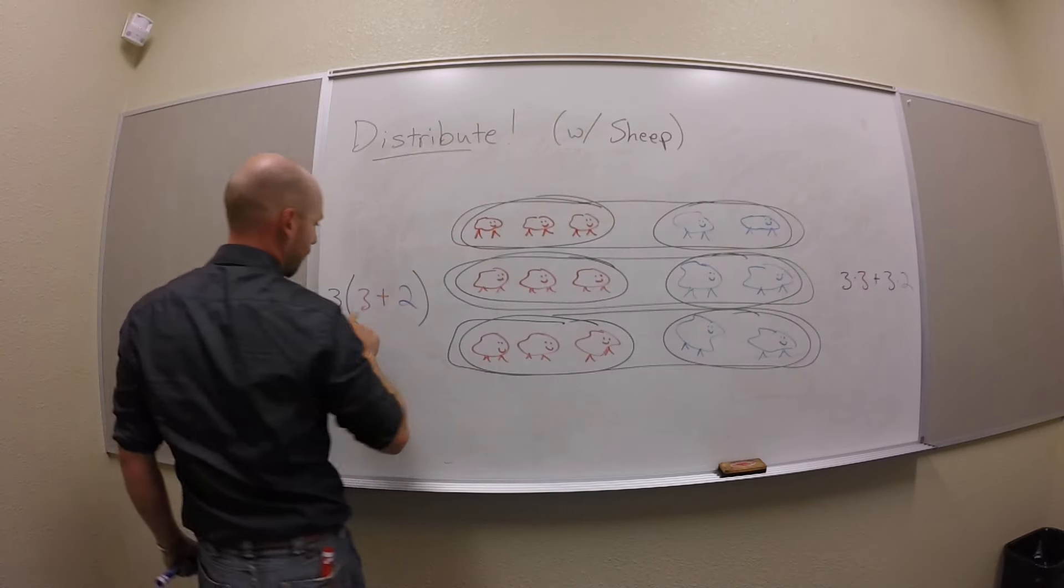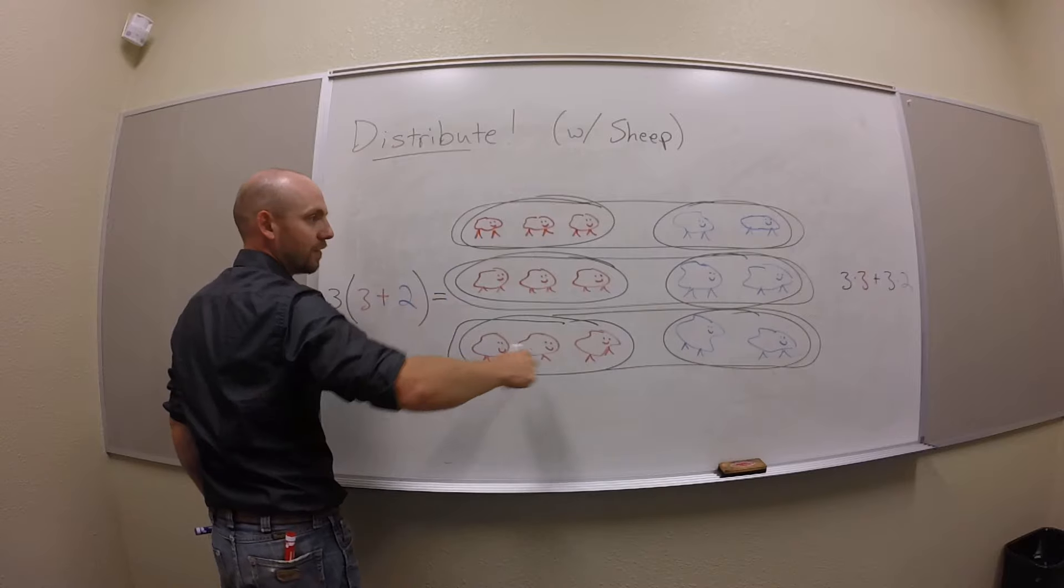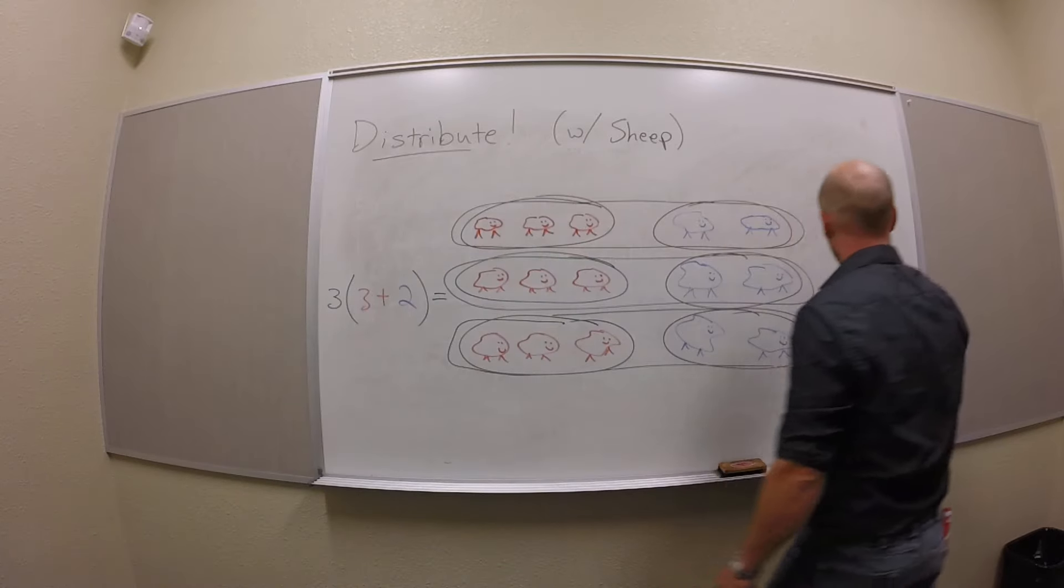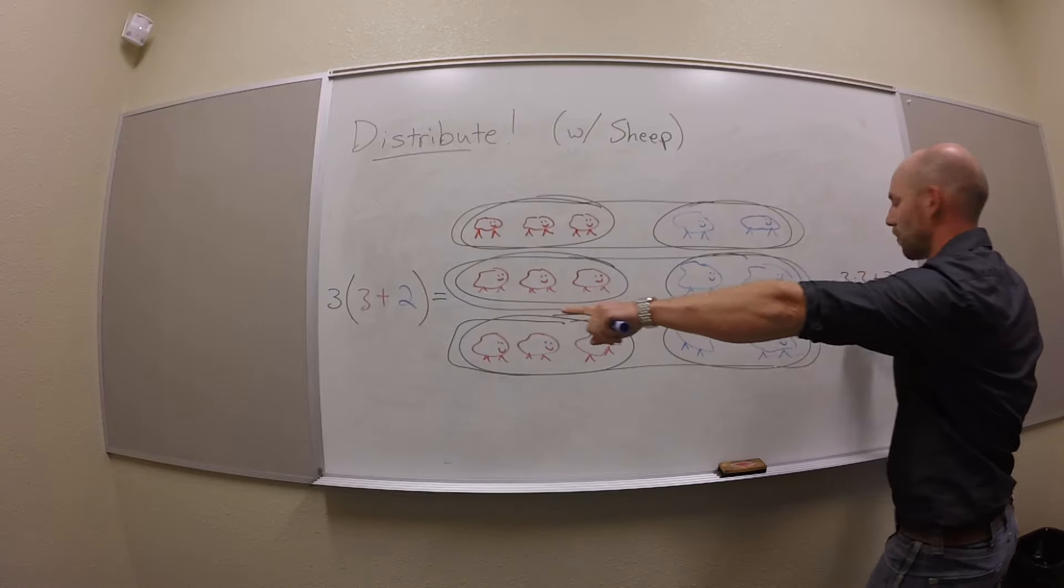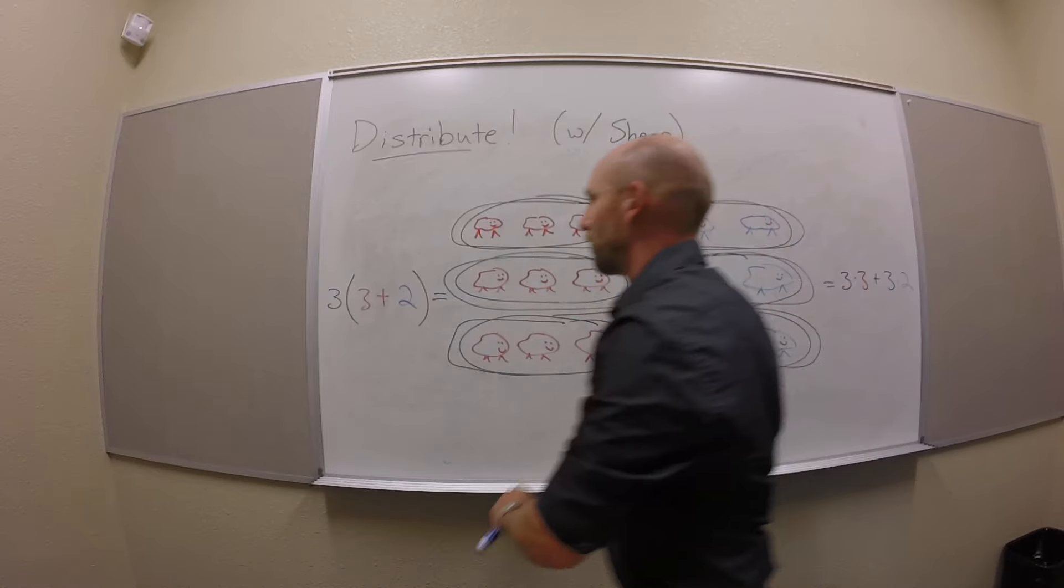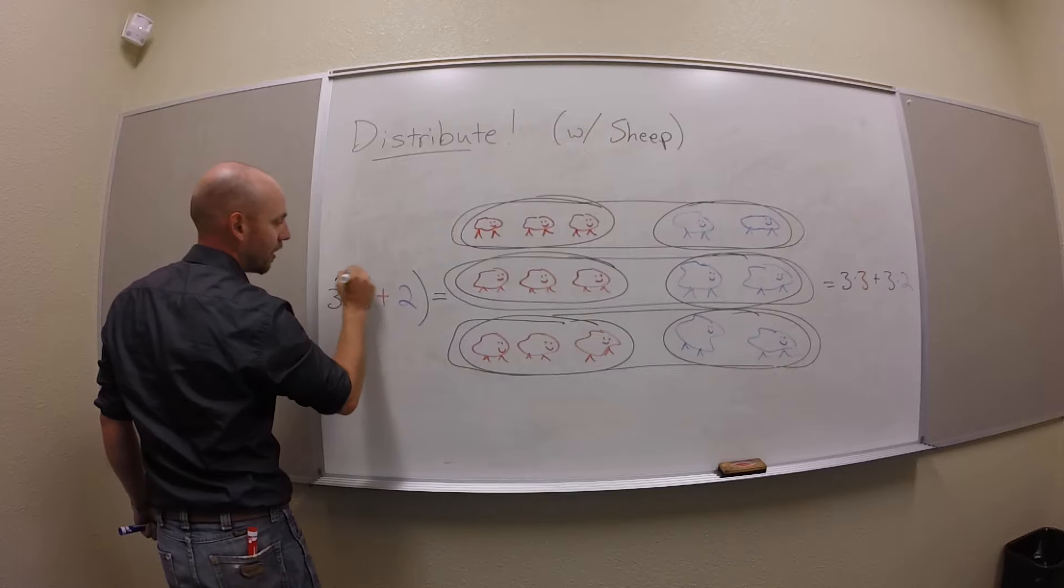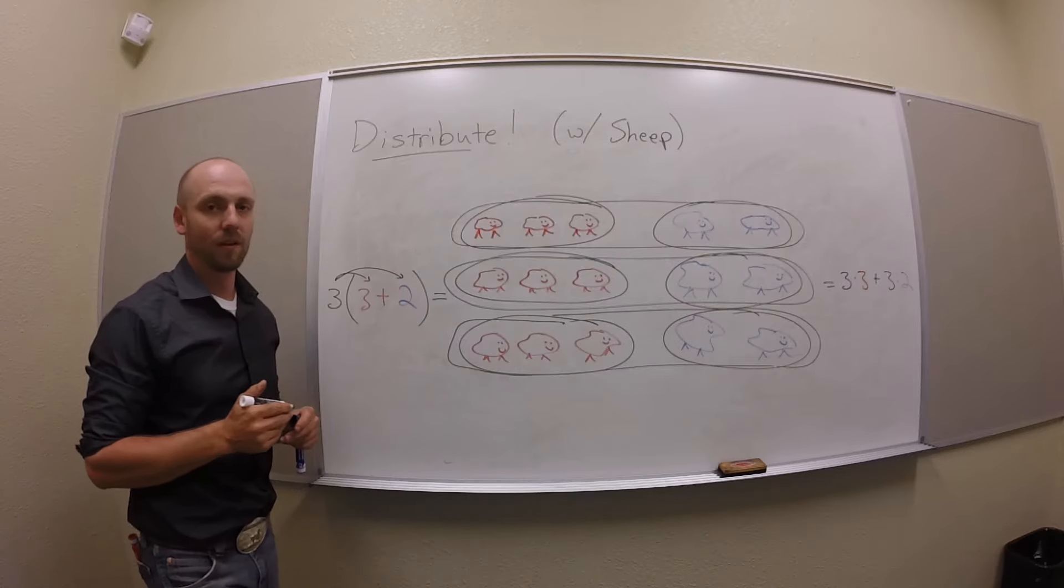So this quantity here is this flock of sheep, but that flock of sheep is also this quantity here. And what did I do to get from that one to this one? I took the number of groups, right, and I distributed it onto the pieces. Cool?